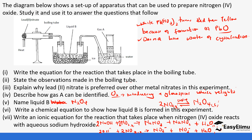That brings us to the end of nitrogen 4 oxide. In the next lesson we will be focusing on ammonia — how it is prepared and some of its properties. See you in the next lesson.